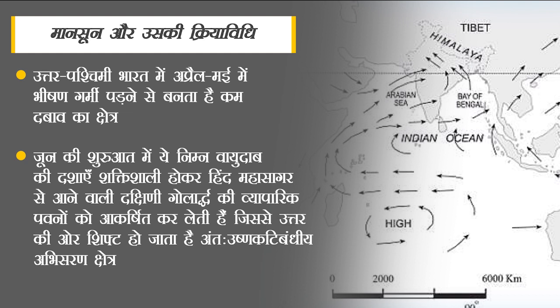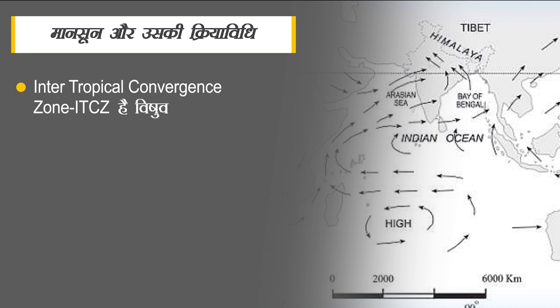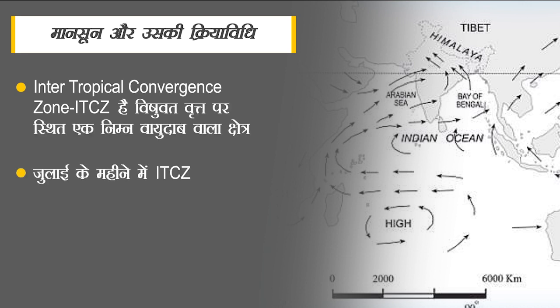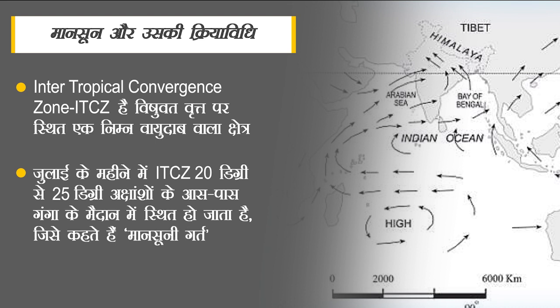मानसून की उत्पत्ति के संदर्भ में कई सिद्धांत प्रचलित हैं। जब उत्तर-पश्चिम भारत में अप्रैल-मई में भीषण गर्मी पड़ती है तो वहां कम दबाव का क्षेत्र बनता है। जून की शुरुआत में ये निम्न वायुदाब की दशाएं इतनी शक्तिशाली हो जाती हैं कि वे हिंद महासागर से आने वाली दक्षिणी गोलार्ध की व्यापारिक पवनों को आकर्षित कर लेती हैं। इन दशाओं में अंतः उष्णकटिबंधीय अभिसरण क्षेत्र (ITCZ) उत्तर की ओर शिफ्ट हो जाता है। ITCZ विषुवत वृत्त पर स्थित एक निम्न वायुदाब वाला क्षेत्र है जहां व्यापारिक पवनें मिलती हैं।